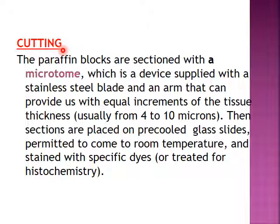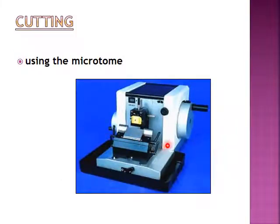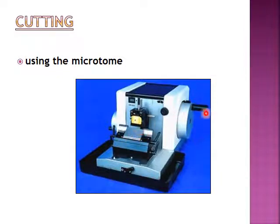Cutting: the paraffin blocks are sectioned with a microtome, which is a device supplied with a stainless steel blade and an arm that provides equal increments of the tissue. The thickness of the sections is usually 4 to 10 microns. The sections are then placed on a pre-cooled glass slide, permitted to come to room temperature, and then stained with a specific dye or treated for histochemistry. The microtome has a tissue block, a blade, and an arm used for cutting.